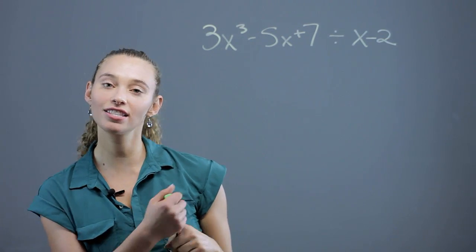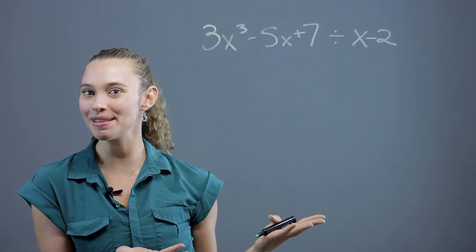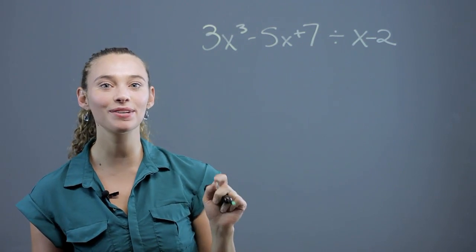There's two ways to do this. One is long division, and the other is synthetic division, or we like to call it the box method. I find this one to be the easiest.